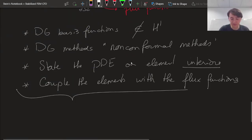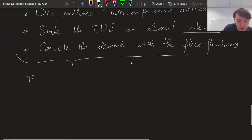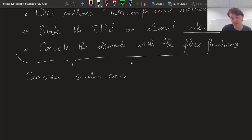Because only there do our basis functions have the necessary amount of smoothness. Then we're going to couple the elements with the flux functions. That's the strategy we'll pursue trying to make discontinuous Galerkin formulations. Let's consider scalar conservation laws.